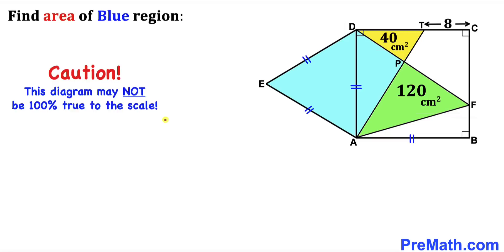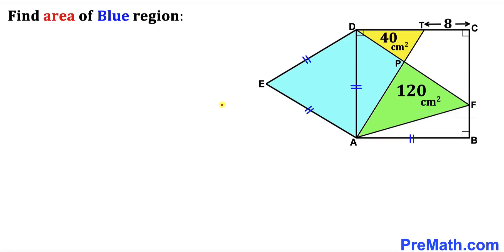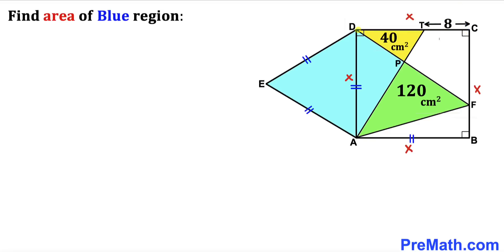Note that this figure may not be 100% true to scale. Let's get started with the solution. Since ABCD is a square, if this side length is x, then all side lengths are x. We know the whole side length is x and the tiny side length TC is 8, so therefore side length DT is going to be x minus 8. Now our task is to calculate the value of x.